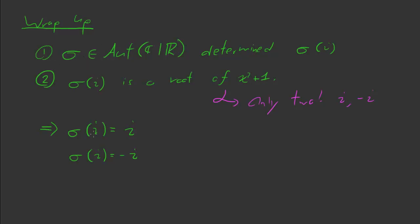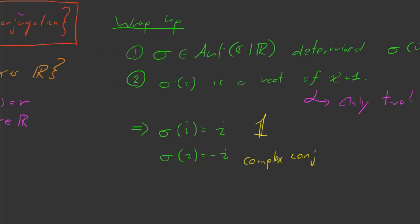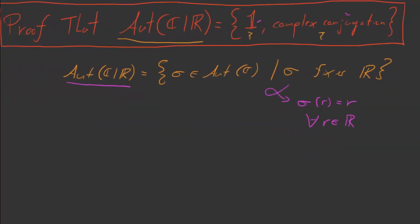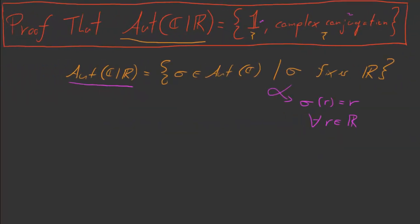So, σ can only come in one of two forms. The form where it leaves i alone. And this, of course, is going to be the identity and the form where it turns i into negative i. And that's complex conjugation. So, that's how we get our desired fact. Using our two key ideas. And that's what we wanted to prove.